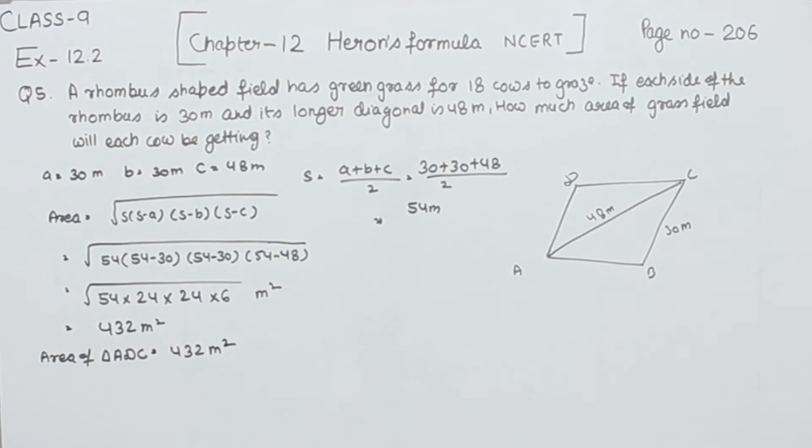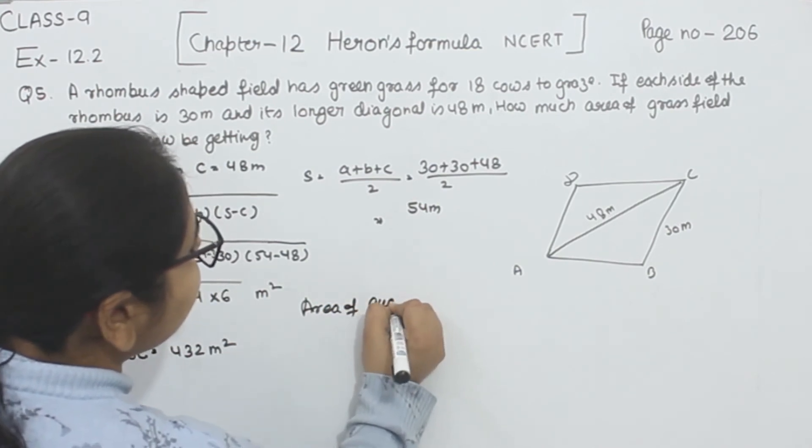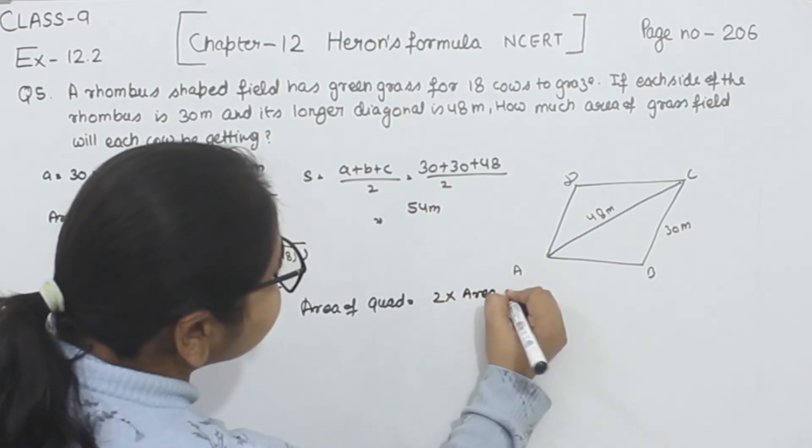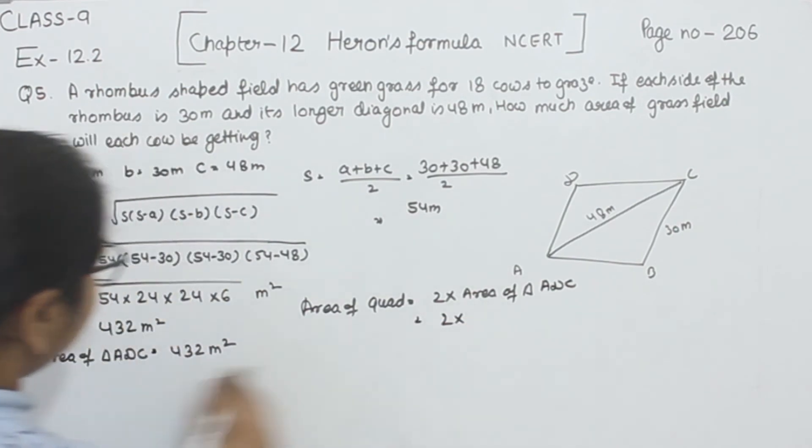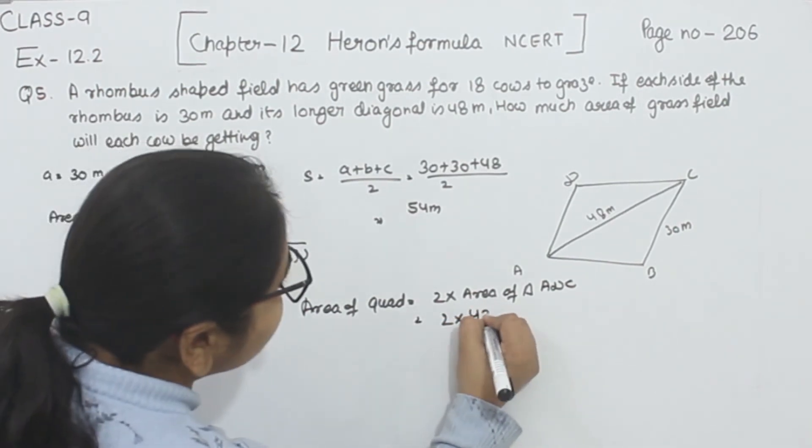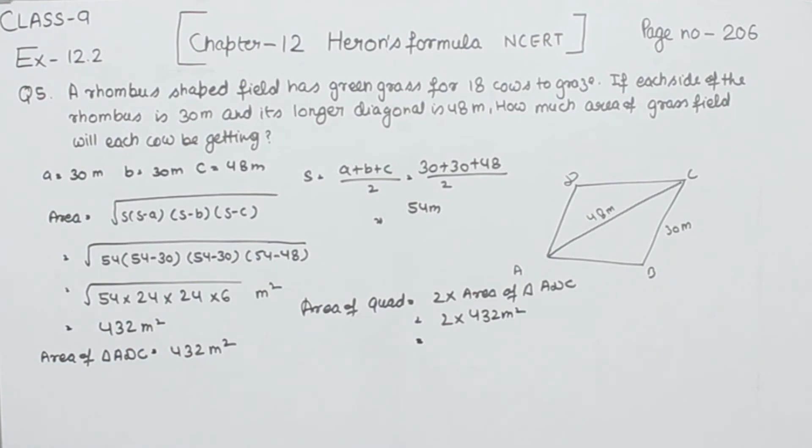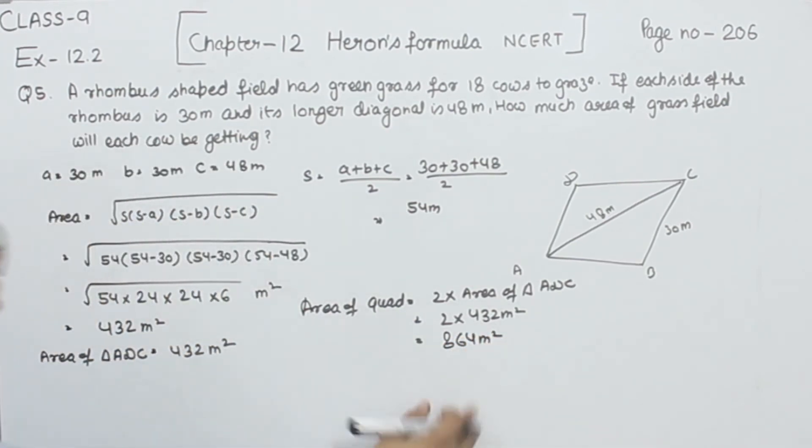Now for finding the area of quadrilateral, area of quadrilateral is equal to 2 multiplied by the area of triangle ADC. So this will be 2 multiplied by 432 meter square. We will multiply it and get the value as 864 meter square. This is the total area of the quadrilateral.